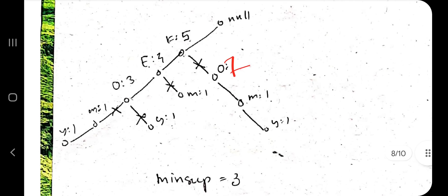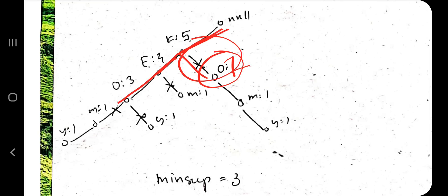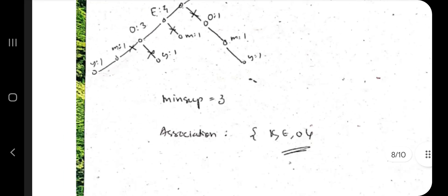After pruning, the surviving frequent itemset is K, E, O. Sometimes multiple answers are valid — for example, if another node had count 7, it would also be a valid frequent itemset. That's how you solve the FP-Growth algorithm.